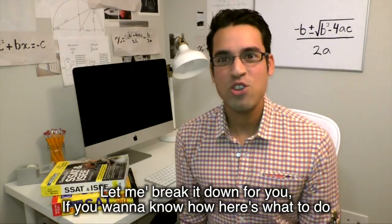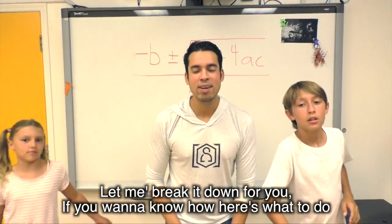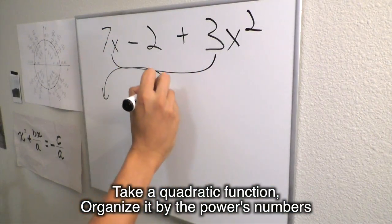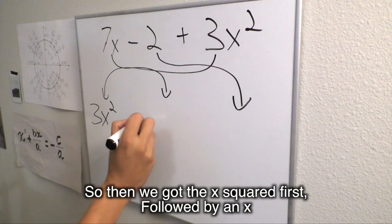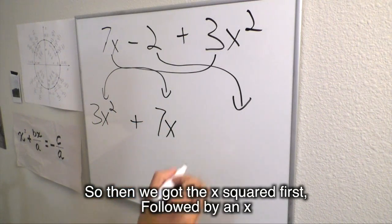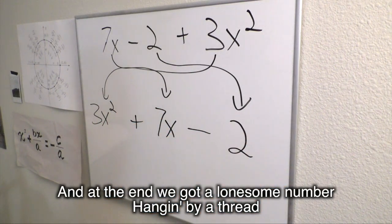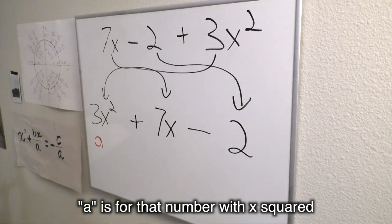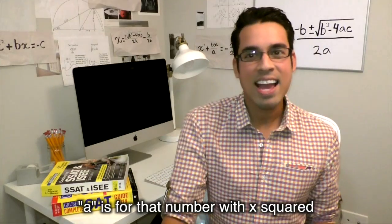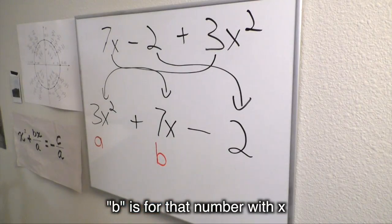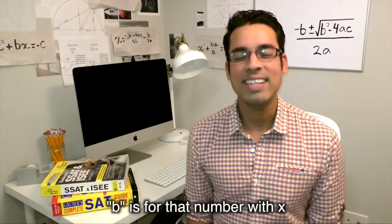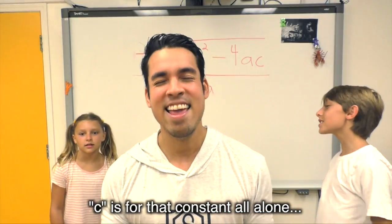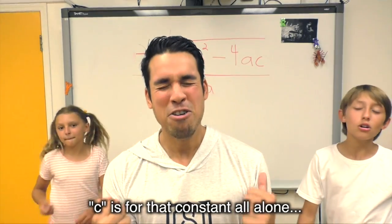Let me break it down for you. If you wanna know how, here's what to do. Take a quadratic function, organize it by the power's numbers. So then we got the x squared first, followed by an x. And at the end we got a long term number hanging by a thread. A is for that number with x squared, B is for that number with x, C is for that constant all alone.